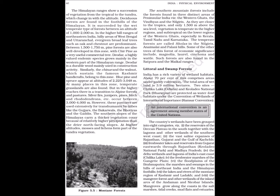Between 1500 to 1750 meters, pine forests are well developed in this zone with cheer pine as a very useful commercial tree. Deodar, a highly valued endemic species, grows mainly in the western part of the Himalayan range. Deodar is a durable wood mainly used in construction activity. Similarly, the chinar and the walnut, which sustain the famous Kashmir handicrafts, belong to this zone. Blue pine and spruce appear at altitudes of 2000 to 3048 meters. At many places in this zone, temperate grasslands are also found.